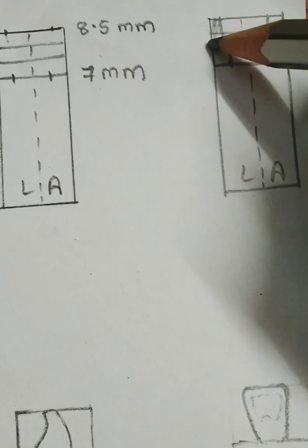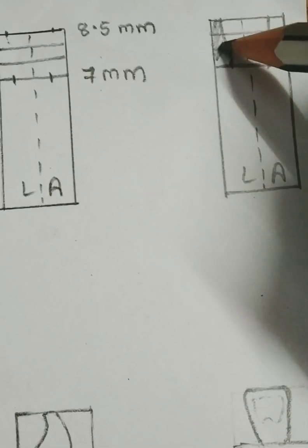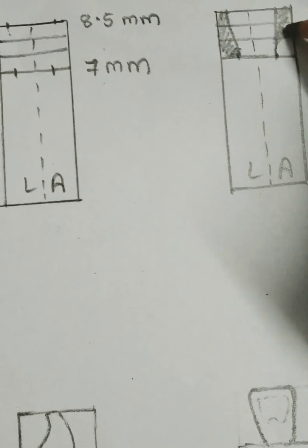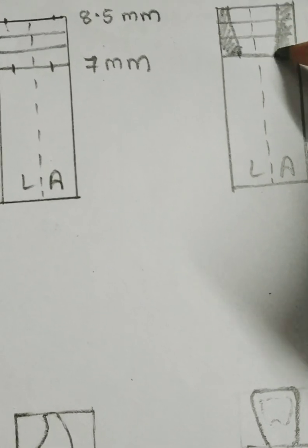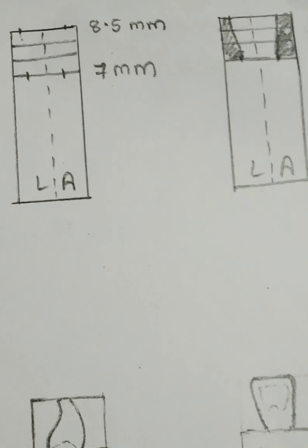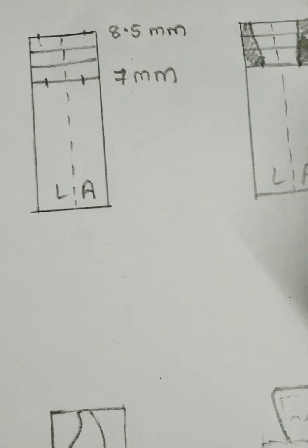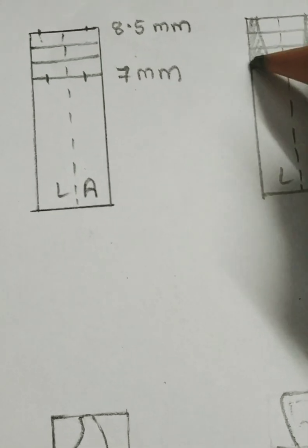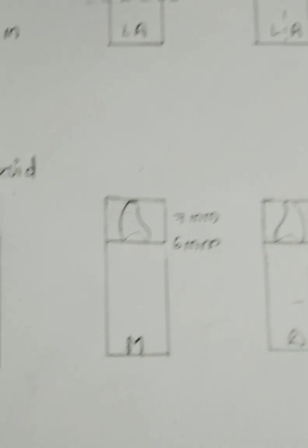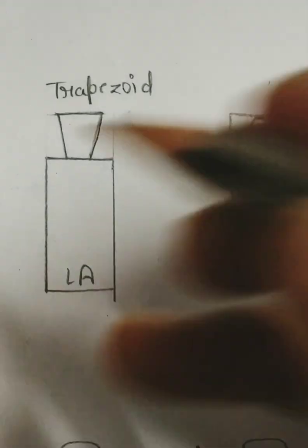Now remove the excess area with the carver. After removing the excess area, we will get a trapezoid outline.